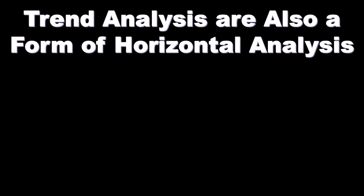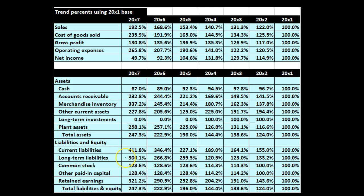Note that trend analysis is also a form of horizontal analysis. In a trend analysis, we compare everything to a base year across more than two periods. When we have multiple years, we designate a base year — for example year one, or 200X1 — and compare all subsequent years back to that base year. So 200X2 compares to 200X1, 200X3 compares back to 200X1, and 200X4 compares back to 200X1. That gives us everything based on the same base year for our trend analysis. We'll talk more about trend analysis in a future presentation.